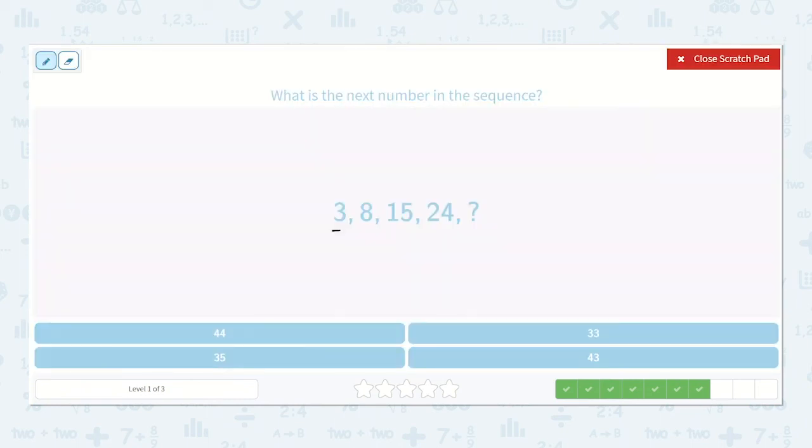Now here we have 3, 8, 15, 24. Well, 3 to 8 is 5. 8 to 15, I know 8 plus 8 is 16, so 8 plus 7 would be 15 because that is one less. 15, well 15 plus 10 would be 25, so I know it must be plus 9 because it is one less than 25.